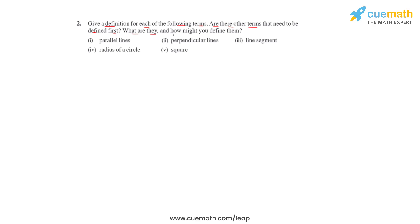radius of a circle and a square. Are there other terms that need to be defined first? What are they and how might you define them? So in order to define these terms, we first need to understand the meaning or the definition of a straight line, a ray and a point.